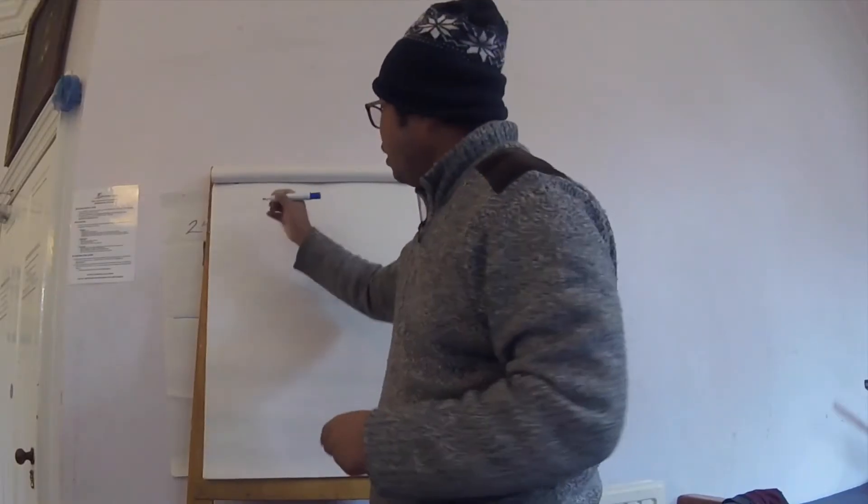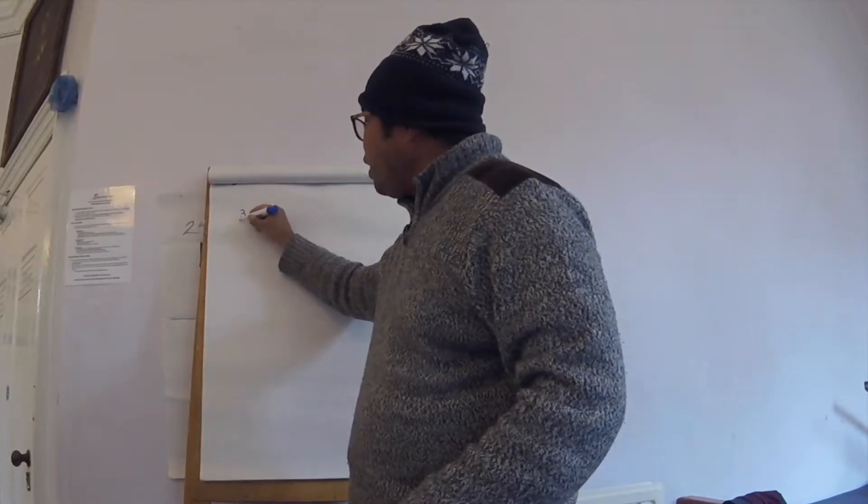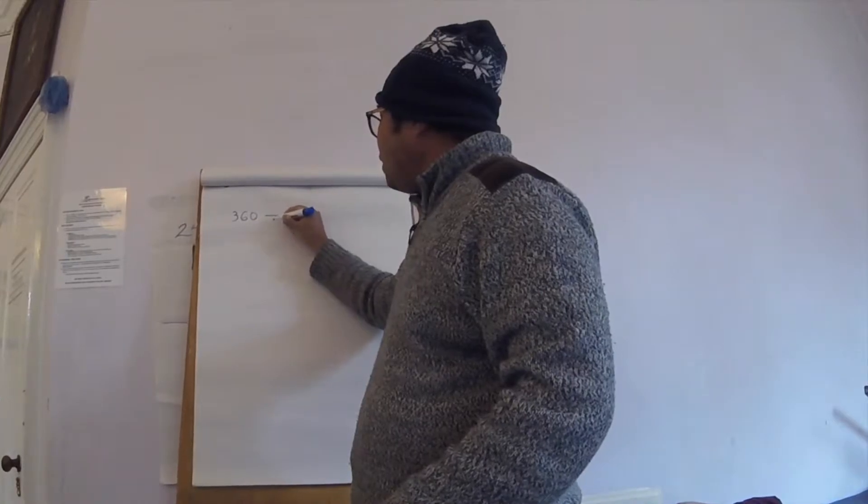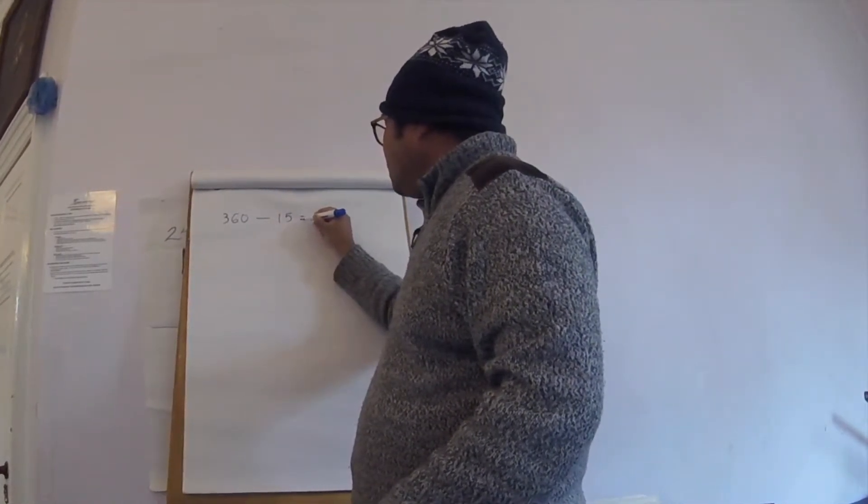Today we're going to do the reverse operation of multiplication using the Egyptian method or the method from the Rhine papyrus. So here this is just an example we covered yesterday, we're going to do 360 divided by 15.